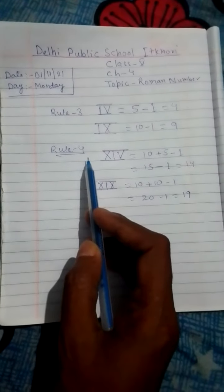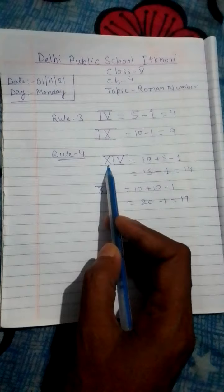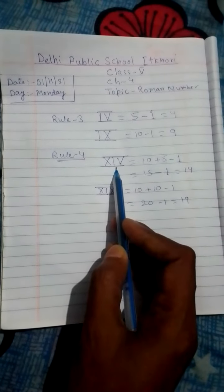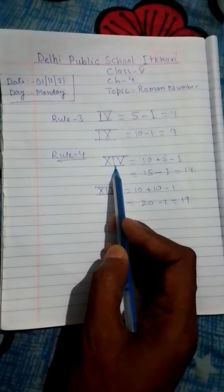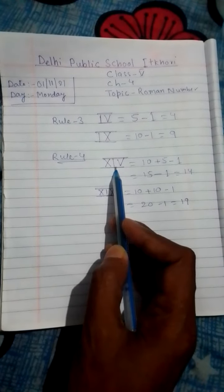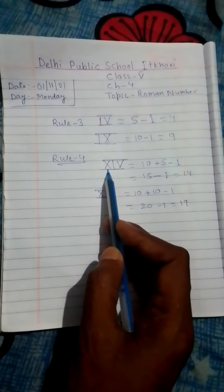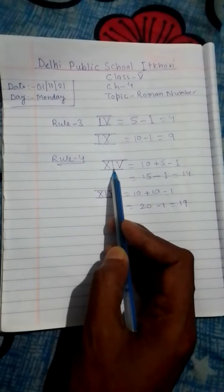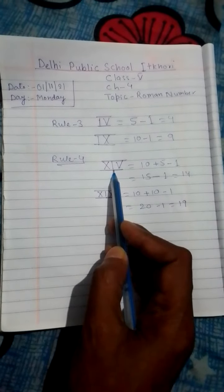Now rule number 4: if there are three symbols from the Roman and more than three symbols, if the smaller symbol is between two bigger symbols, then in this case also I will subtract.